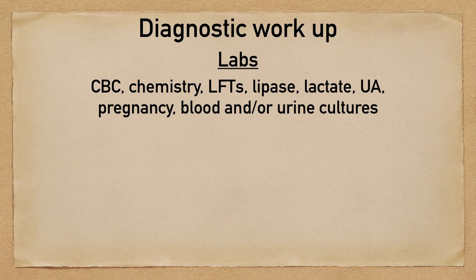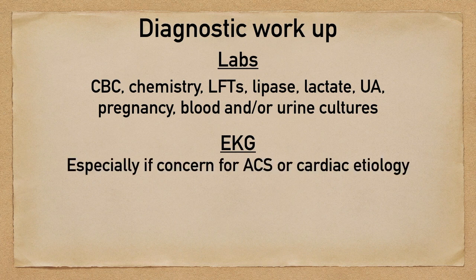If you're worried about a urinary source, then get a urinalysis. If the patient is higher risk or you're worried about surgical or ischemic causes, sepsis, or any other reason to get a lactate, then do so. Don't forget about a pregnancy test if appropriate. If there's any concern for an infectious etiology, you should consider blood cultures and or urine cultures. If the patient is higher risk for a cardiac cause leading to their upper abdominal pain, make sure to obtain that EKG.